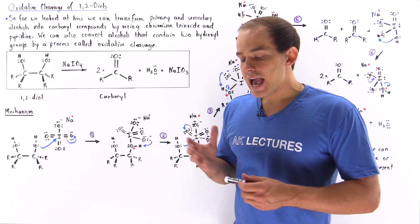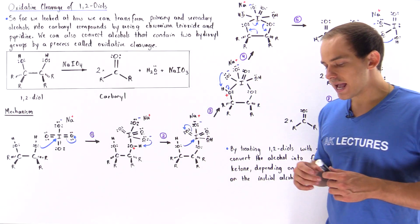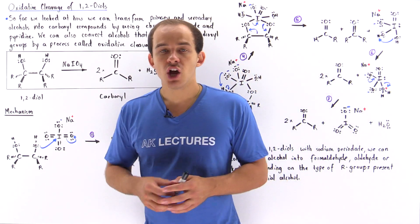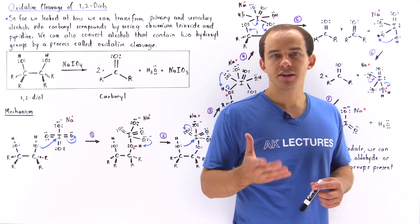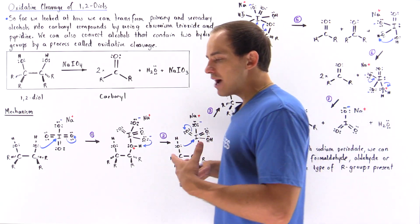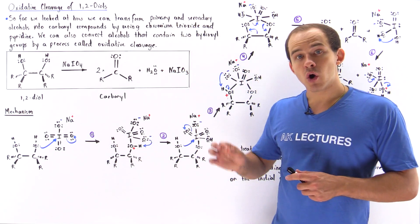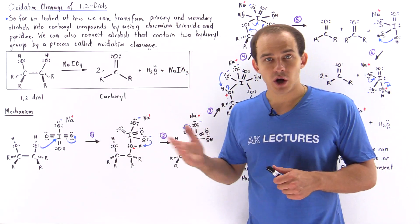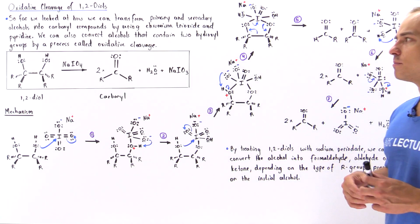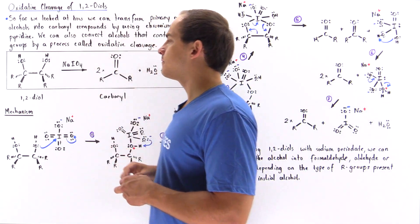So far we looked at how we can transform primary and secondary alcohols into their carbonyl counterparts by using chromium trioxide in the presence of pyridine. Now we're going to discuss how we can transform alcohols that contain two hydroxyl groups, known as 1,2-diols, into their carbonyl counterpart by using a process known as oxidative cleavage.